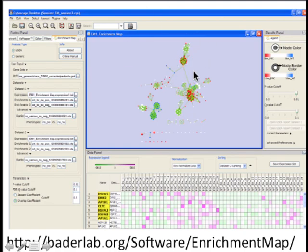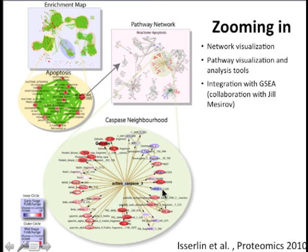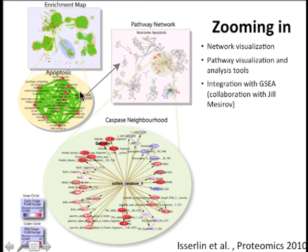Once you've identified interesting pathways, you can zoom in on them. The enrichment map gives you a bird's-eye view or overview of the whole experiment. You might identify a pathway or theme of interest, and then even go further to identify one specific pathway. For example, the Reactome apoptosis pathway is represented as one little circle in the big diagram, but if you go look in Reactome it's a complicated pathway. You can overlay your gene expression data on it and identify more interesting information — in this case we realized one particular complex in this pathway was really differentially expressed.